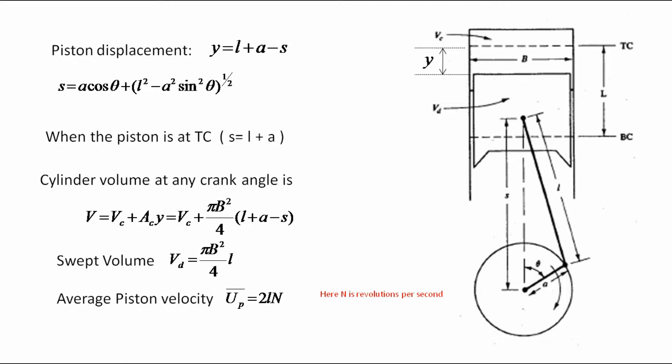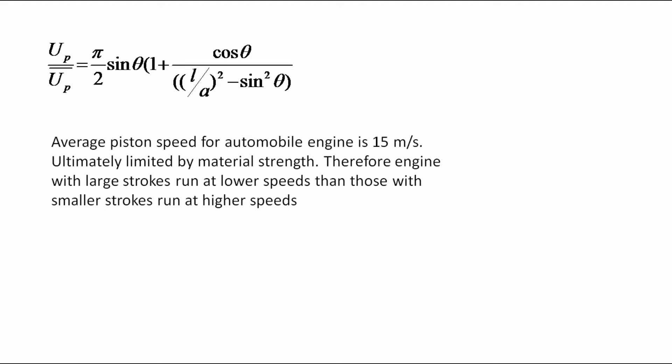We know instantaneous piston velocity up is equal to ds by dt. And finally we get up by up bar is equal to pi by 2 into sin theta into 1 plus cos theta by l plus a whole square minus sin square theta whole power 1 by 2. Average piston speed for automobile engine is 15 m per second, ultimately limited by material strength. Therefore engines with larger strokes run at lower speeds than those with smaller strokes which run at higher speeds.